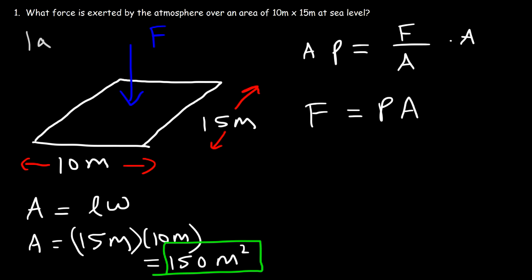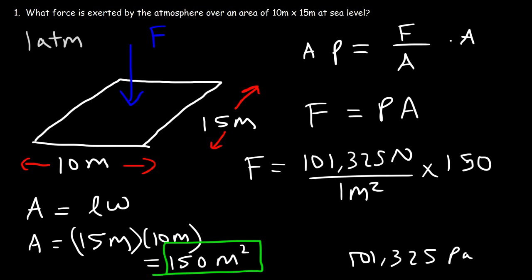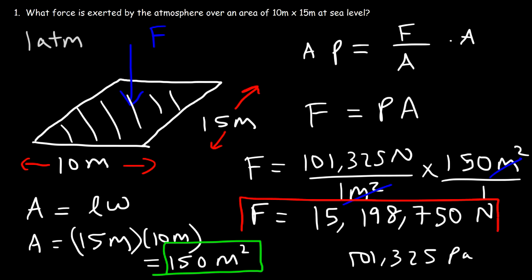The atmospheric pressure is 1 atm, but we'll use pascals: 101,325 pascals, or newtons per square meter. So the force is 101,325 newtons per square meter multiplied by 150 square meters. The square meter units cancel, and the weight force exerted by all the air molecules above this surface is 15,198,750 newtons. That is the weight of the air above that surface.